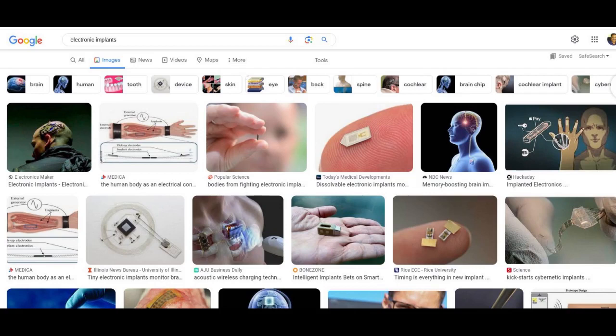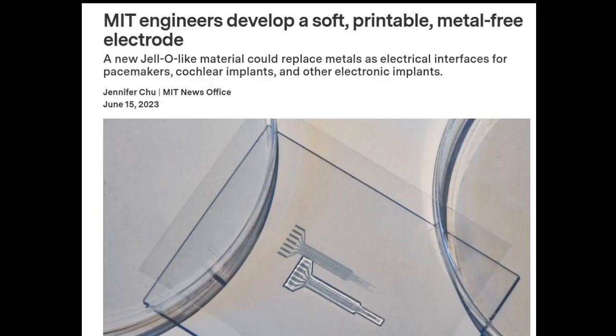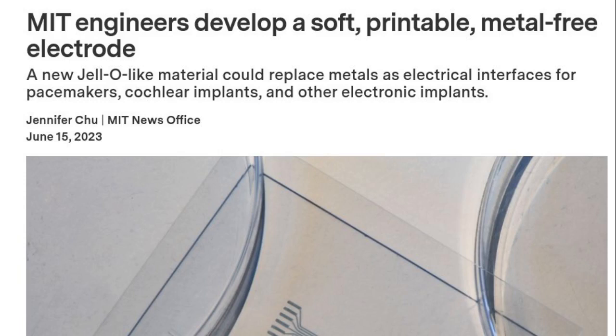Some implants are hard and bulky, while others are flexible and thin. But no matter their form and function, nearly all implants incorporate electrodes, small, conductive elements that attach directly to target tissues to electrically stimulate muscles and nerves.